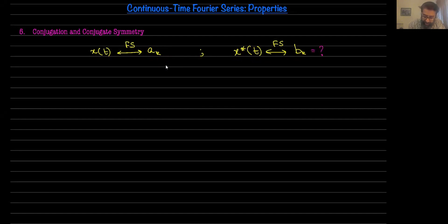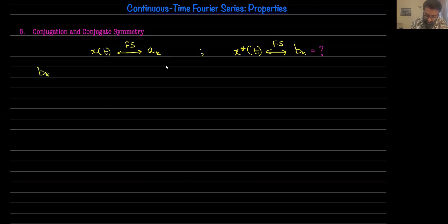In order to address this, let me use the analysis equation — although you can go ahead and use the synthesis equation as well. So b_k, which are the Fourier series coefficients of x conjugate of t, is defined as one over T, the integral over T, of x conjugate of t times e raised to minus j k omega-naught t, dt.